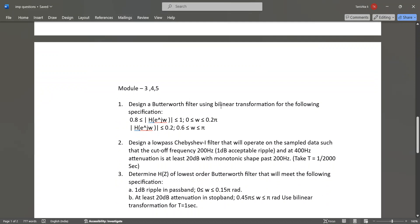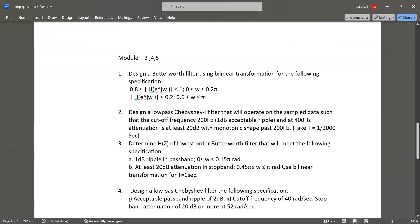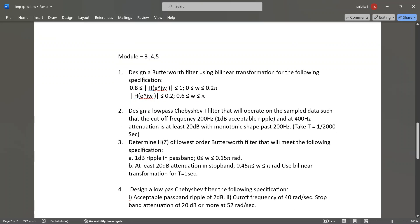Design a Butterworth filter using bilinear transformation for given specifications (e to the power j omega). Design a low-pass filter and determine H(z) of a lowest-order Butterworth filter.